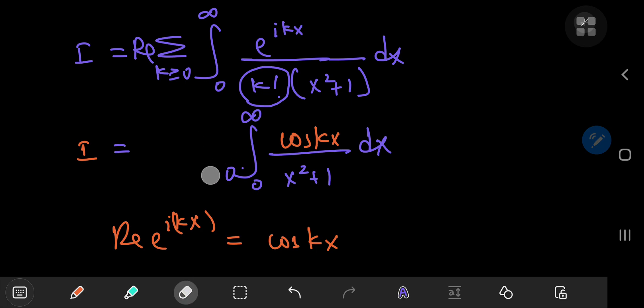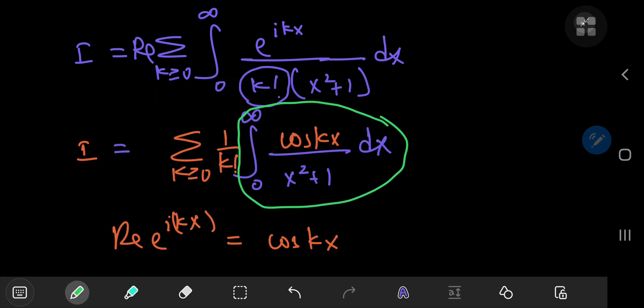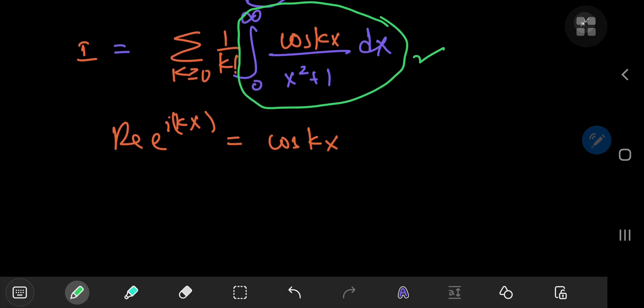Infinite sum over k, 1 by k factorial. Now, what you have, this integral that you have, is actually quite familiar. I've evaluated this in the past using Feynman integration or Feynman's technique, and I've also evaluated it once using the Laplace transform. So I've provided the link in the description. This is actually quite a beautiful integral that sorts out to pi by 2 e to the k.